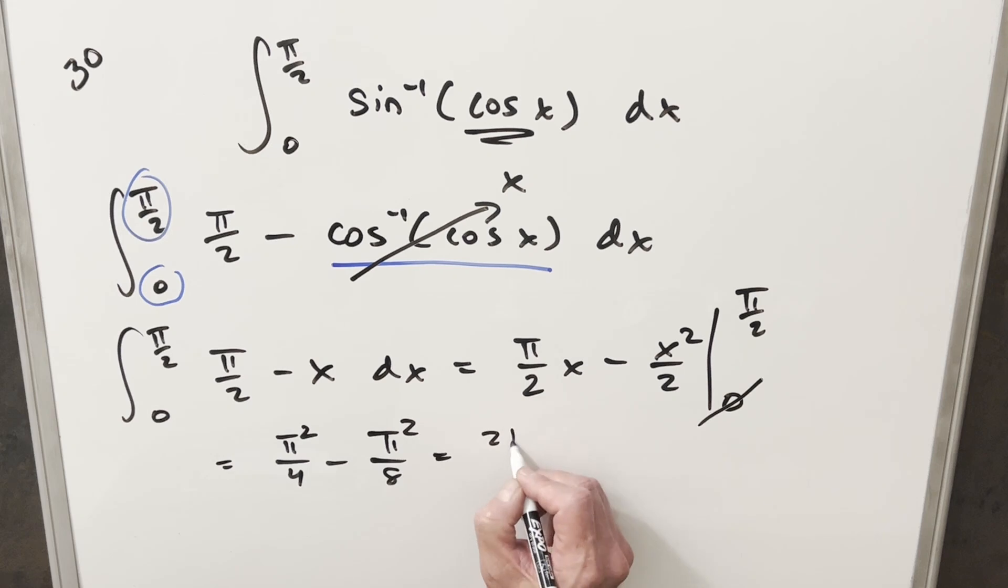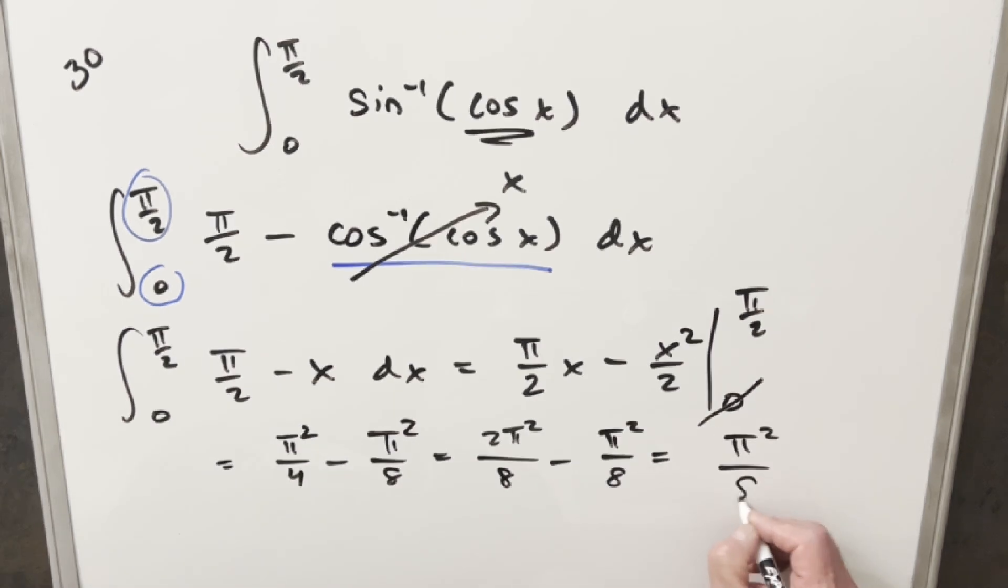Get a common denominator on this. We're gonna have for the first one 2π²/8 minus π²/8. And so for my final solution we just get π²/8.